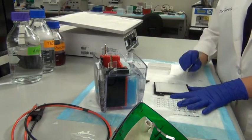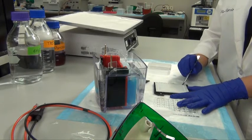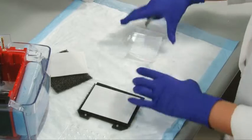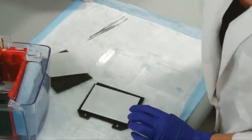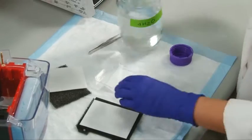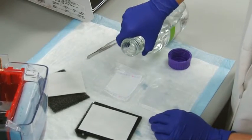After electro transfer of our proteins to a membrane, we will now block the blot, apply a primary antibody specific for our protein of interest, and then a secondary antibody which will recognize the primary antibody. Start by removing the membrane from the cassette and rinsing three times in water.